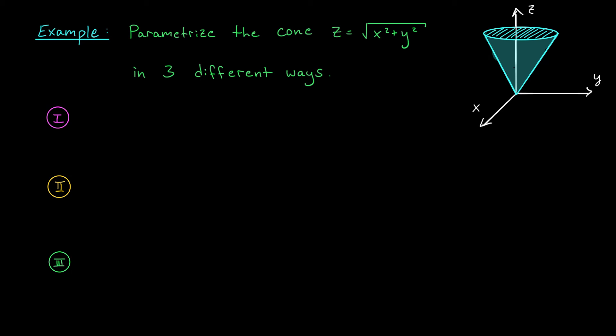The first approach is to use what we learned on the last slide. We can think of z as a function of x and y. And therefore, we can use the parametrization r of x, y, these are our parameters, equals x, y, square root of x squared plus y squared. Here, x and y could be whatever you like. x and y are any real number.